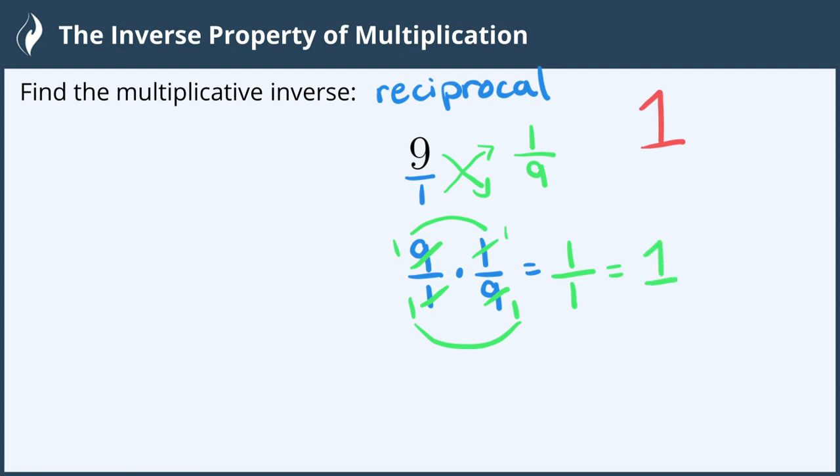1 divided by 1 is 1, which means we did indeed find the multiplicative inverse because when we multiplied them together we got the multiplicative identity.